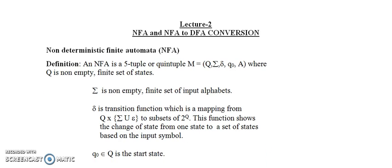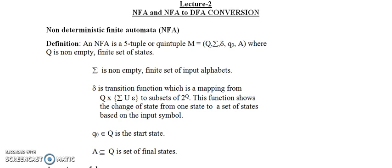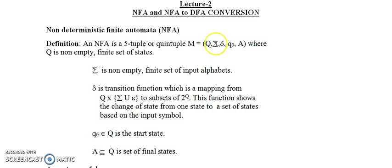What is NFA? It is also a set of 5 tuples: Q, sigma, delta, Q0, and A. In DFA also we have seen these tuples were the same. So what is the difference between NFA and DFA? Only delta will differ here.